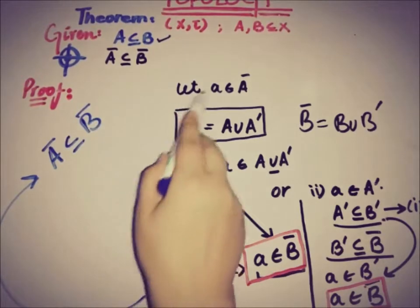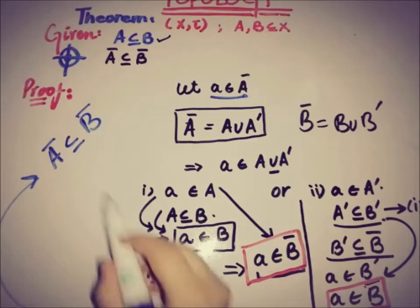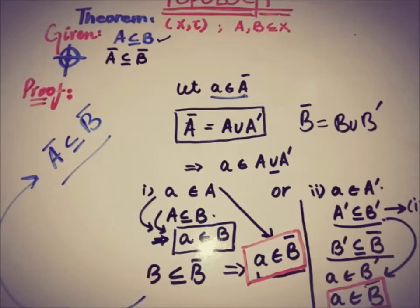Since every element of Ā was shown to be a member of B̄, combining both cases gives us Ā ⊆ B̄, which was our target. This completes the proof. For more such videos, subscribe to this channel to watch upcoming videos. We will meet in the next video — till then, take care, goodbye.